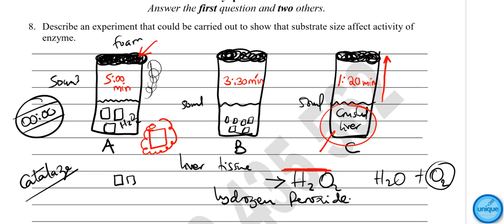After crushing the liver using a mortar and pestle, set a stopwatch. Press the larger cubes of liver into test tube A, then start the stopwatch immediately. Record the time taken for the foam produced to rise up to the mouth of the test tube. Repeat the same procedures by placing smaller pieces and crushed pieces into test tubes B and C.